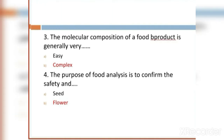MCQ 3: The molecular composition of a food product is generally very _____. Option A: easy. Option B: complex. The right answer is complex.